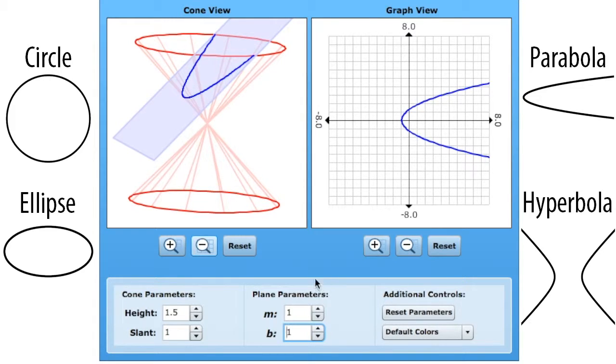If you ever get to a point that you get stuck, and you move things and you need to reset it, just hit reset parameters, and it will reset everything. And you'll need to reset your cone and graph view as well, but that will help you reset everything.